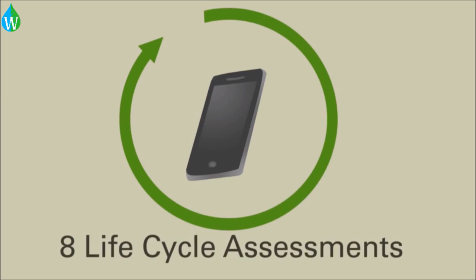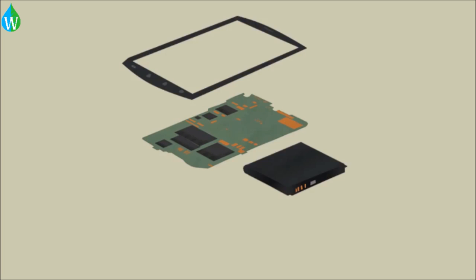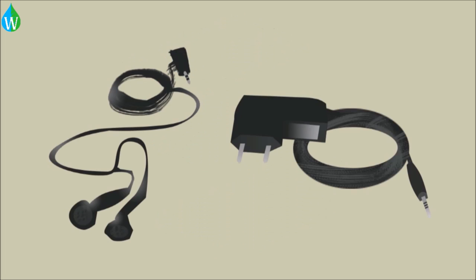Mobile phones have eight life cycle assessments, one for each component. These include the printed circuit board, the display, the battery, the keypad, the microphone, the speaker, the plastic casing, and any accessories.